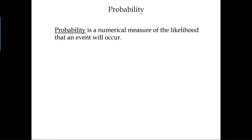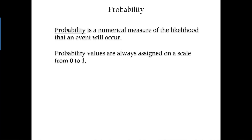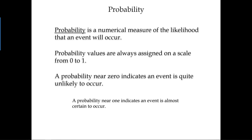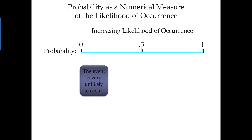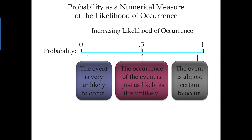You already understand the relationship between that number called probability and the occurrence of an event. Probability is a numerical measure of the likelihood that an event will occur. Probability values are always between zero and one — it cannot be smaller than zero or larger than one. A probability near zero indicates the event is quite unlikely; a probability near one indicates the event is almost certain to occur.